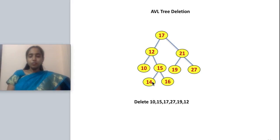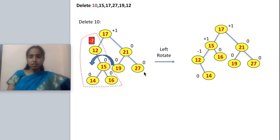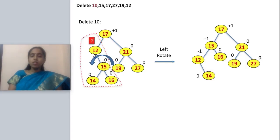First, deletion at 10. Node 10 is a leaf — it has no left or right child — so we can directly delete it. After deleting 10, I calculate the balance factor. The balance factors for 14 and 16 are 0, for 15 it is 0, but for 12 it is 0 minus 2, giving minus 2 — an unbalanced state.